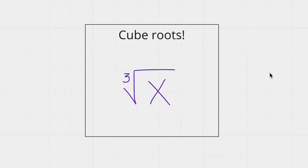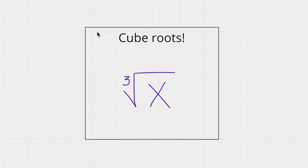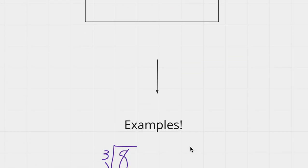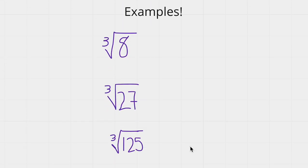So let's try cube roots. A cube root looks like this, wherein there is a 3 outside of the radical sign. This means that anytime a number is repeated 3 times inside the radical sign, the answer would just be that number itself. So let's try some examples.